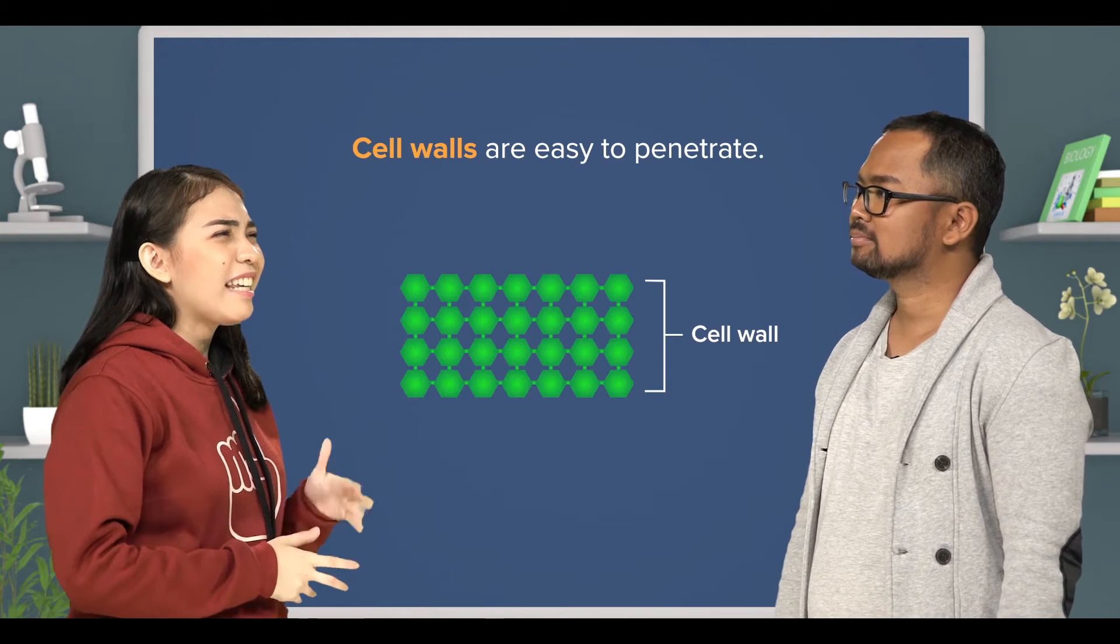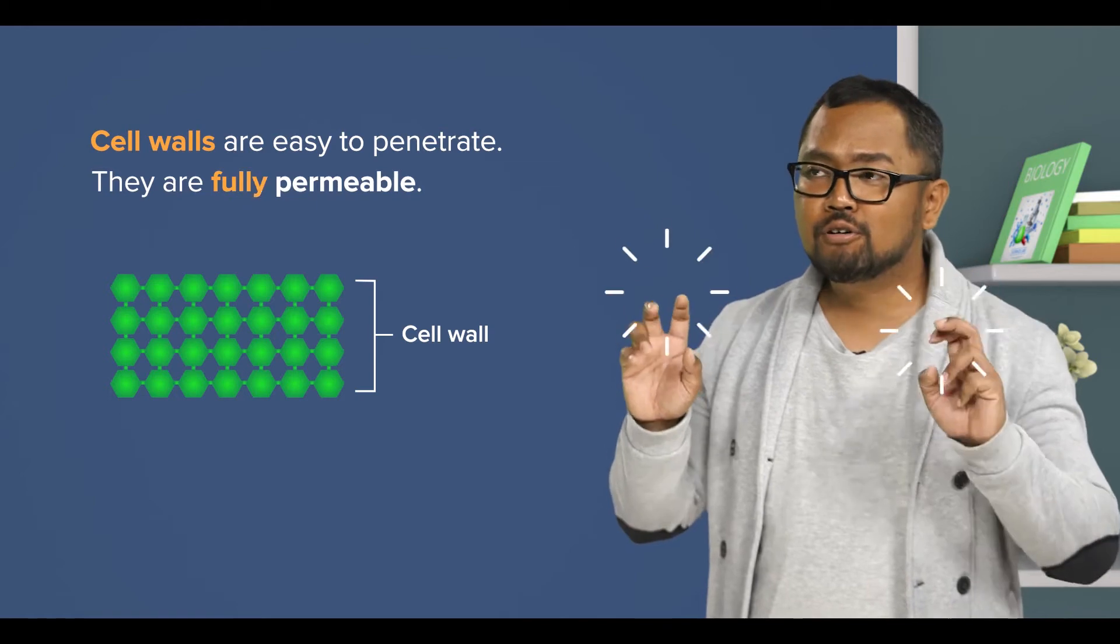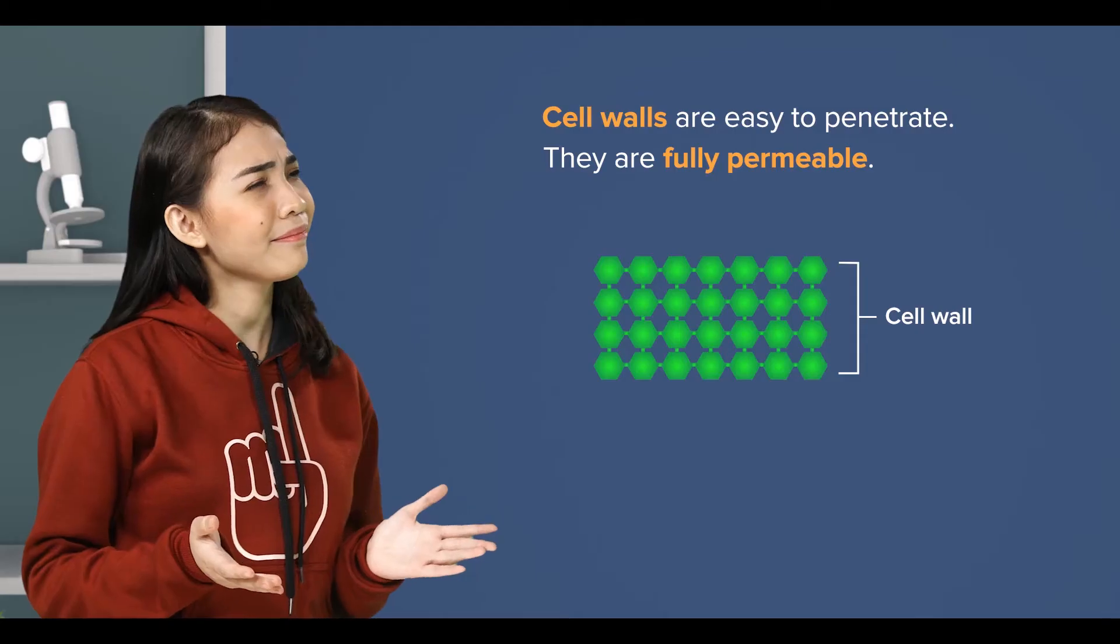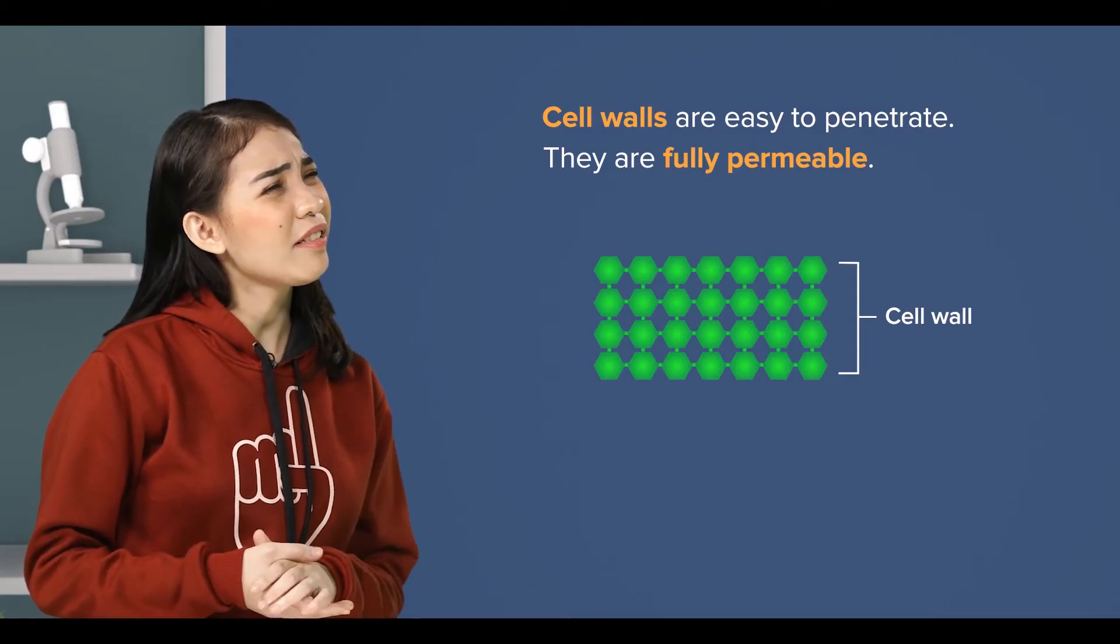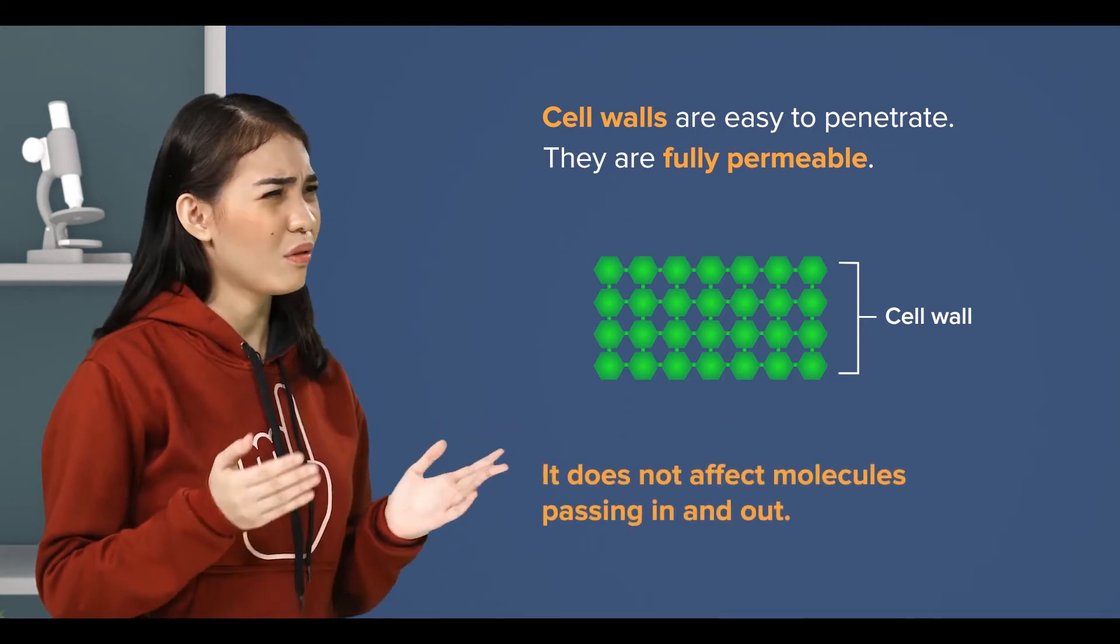cell walls are easy to penetrate? Yes, they are. And that's why we call them fully permeable. Since cell walls are fully permeable, it does not affect molecules passing in and out, right?